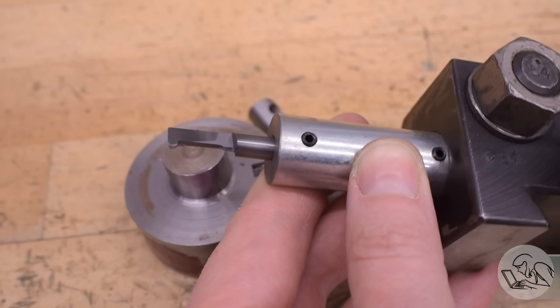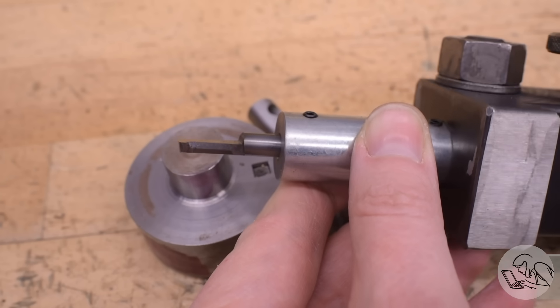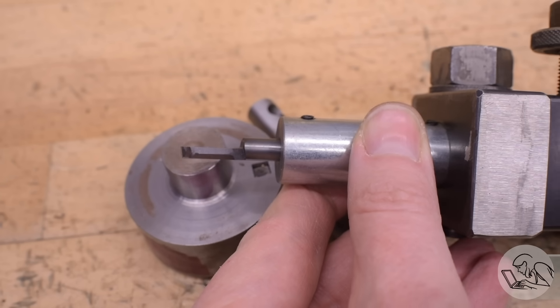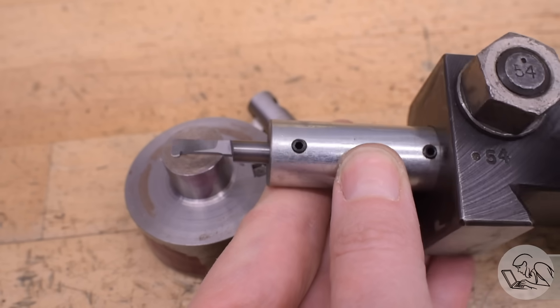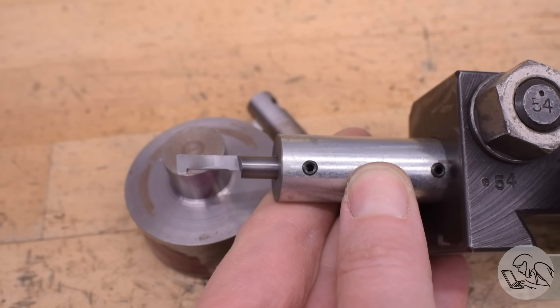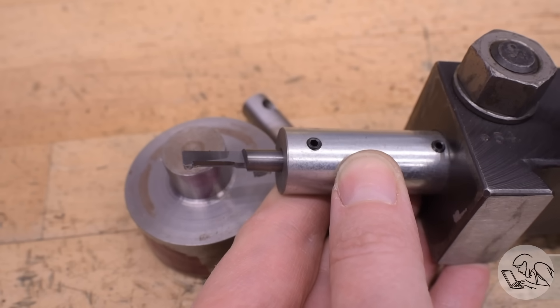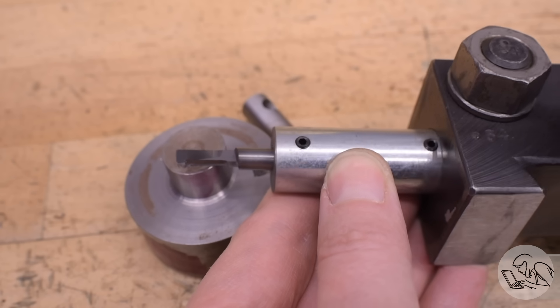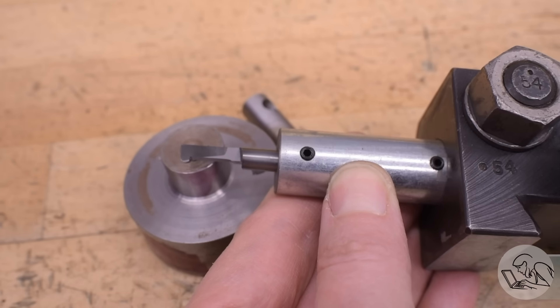You can get as fancy as needed with this. This is an internal grooving tool that I ground entirely from a round piece of bar stock so that I could install it in this boring bar holder that accepts round shank tools. Once again, this was vastly easier than trying to make a deep square hole to hold this tool.